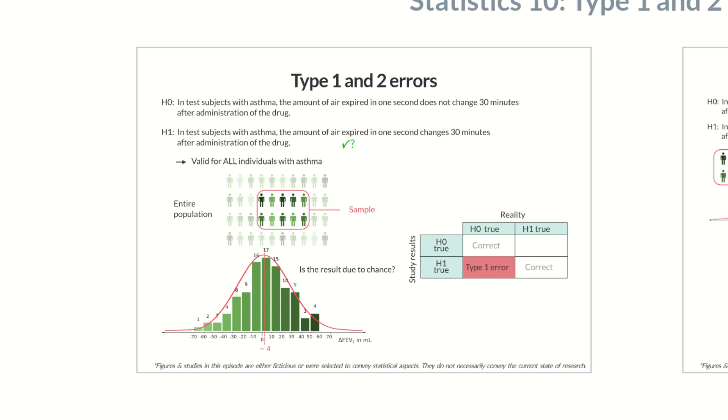This is a type 1 error. In contrast, if we reject the alternative hypothesis even though it's true, that is, the null hypothesis is accepted when it's actually false, this is known as a type 2 error.